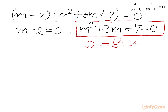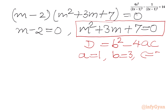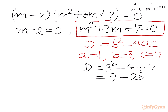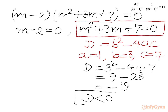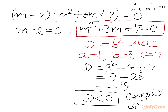Now we check the discriminant for m² + 3m + 7, where a = 1, b = 3, c = 7. The discriminant D equals 3² - 4(1)(7), which gives 9 - 28 equal to -19. The discriminant is negative, so we get complex solutions. Since we are looking for real solutions, we reject this quadratic equation.